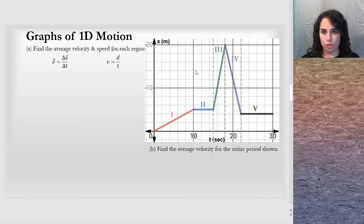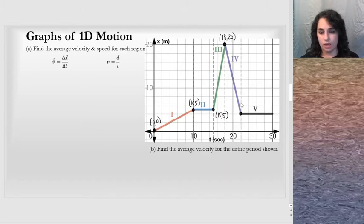Graphs of 1D motion. You may recognize this position versus time graph from a previous video. We have time on the horizontal axis and position on the vertical one. And there's five different regions here. And we identify the points at the ends of the region. So I'm going to go ahead and do this: 0, 0; 10, 5; this is 15, 5; 18, 20; and this one is 22, 4; 30, 4.